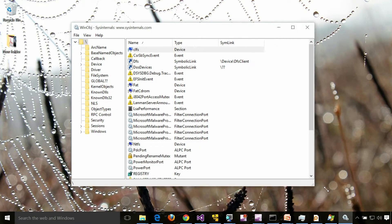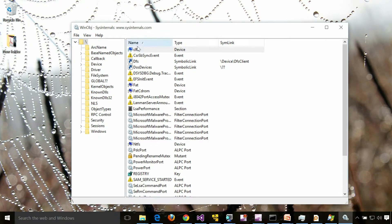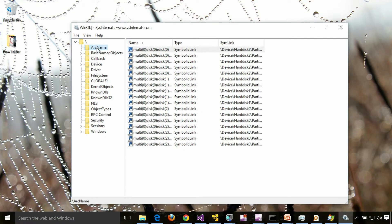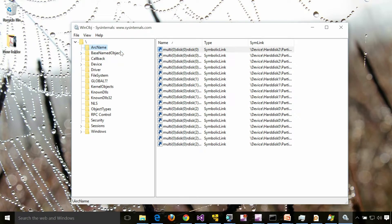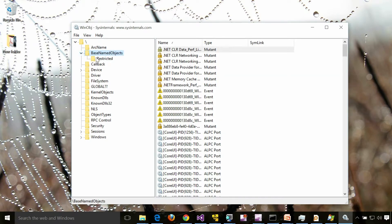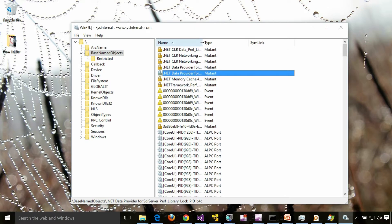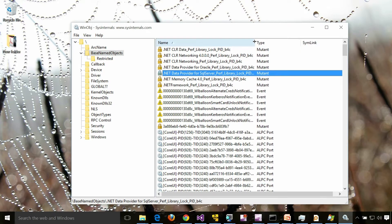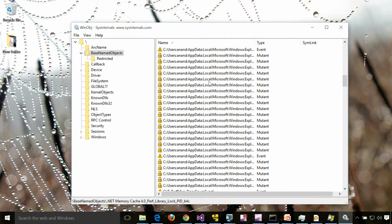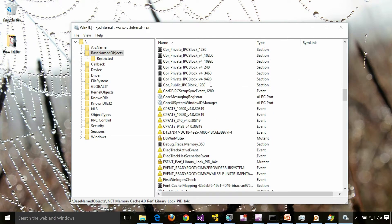This is WinObj from Sysinternals. This is the object manager namespace. You're seeing in kernel these are the objects available in the system right now, and theoretically you can get handles for all these objects which you're seeing right here.